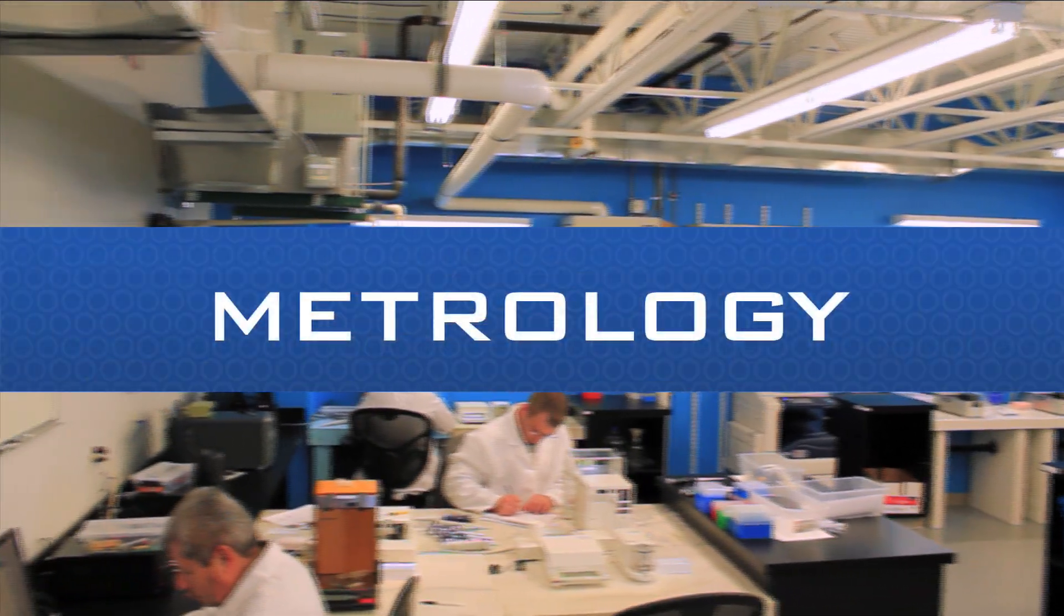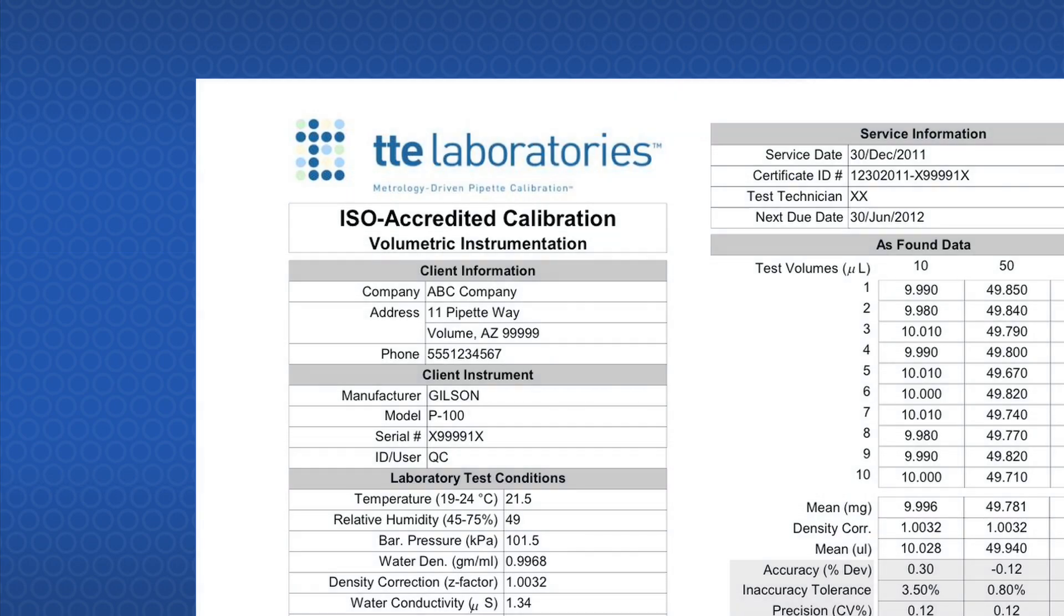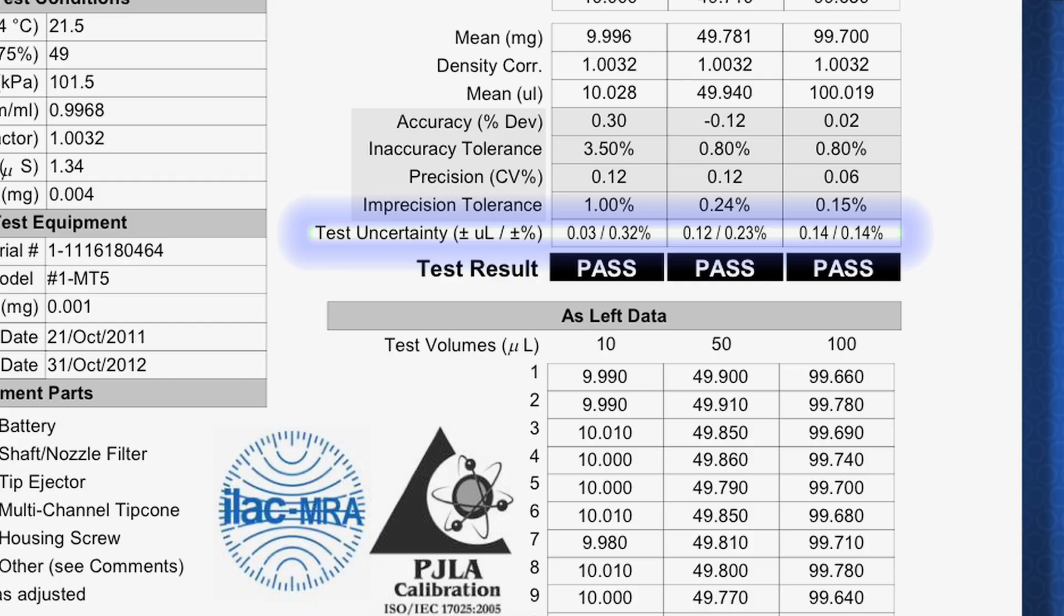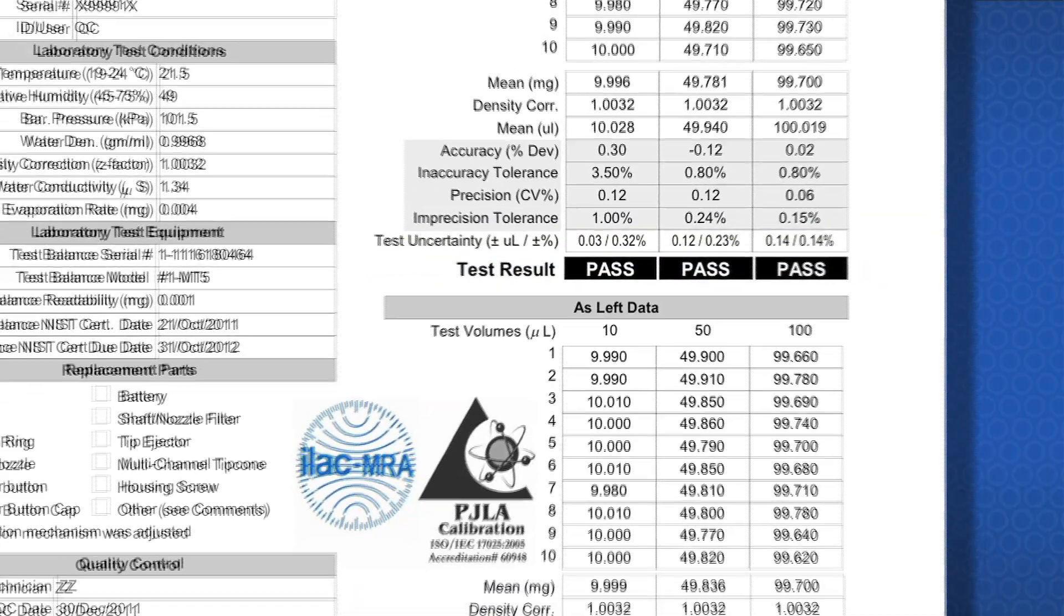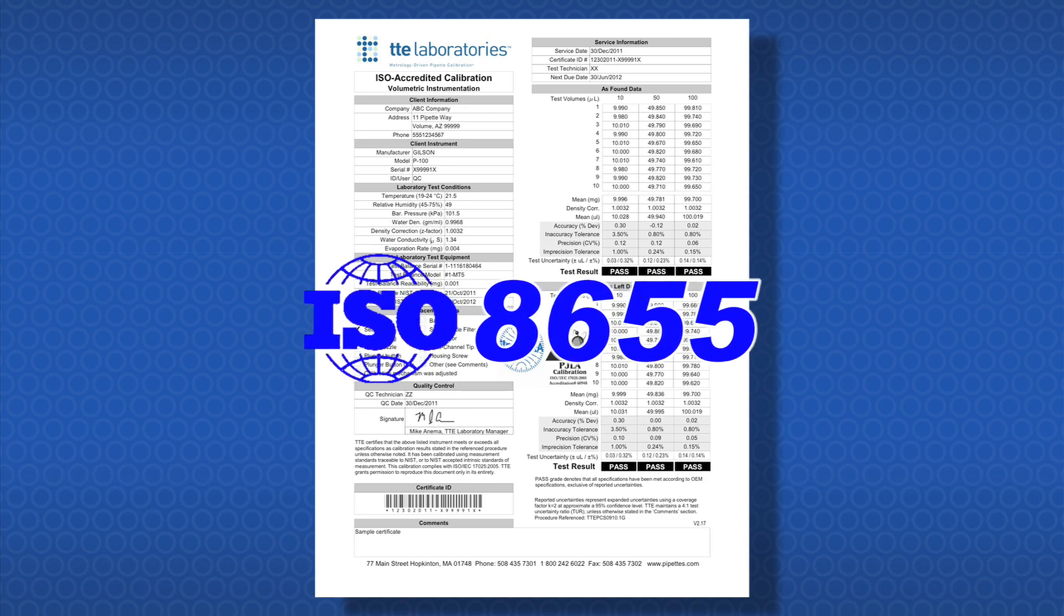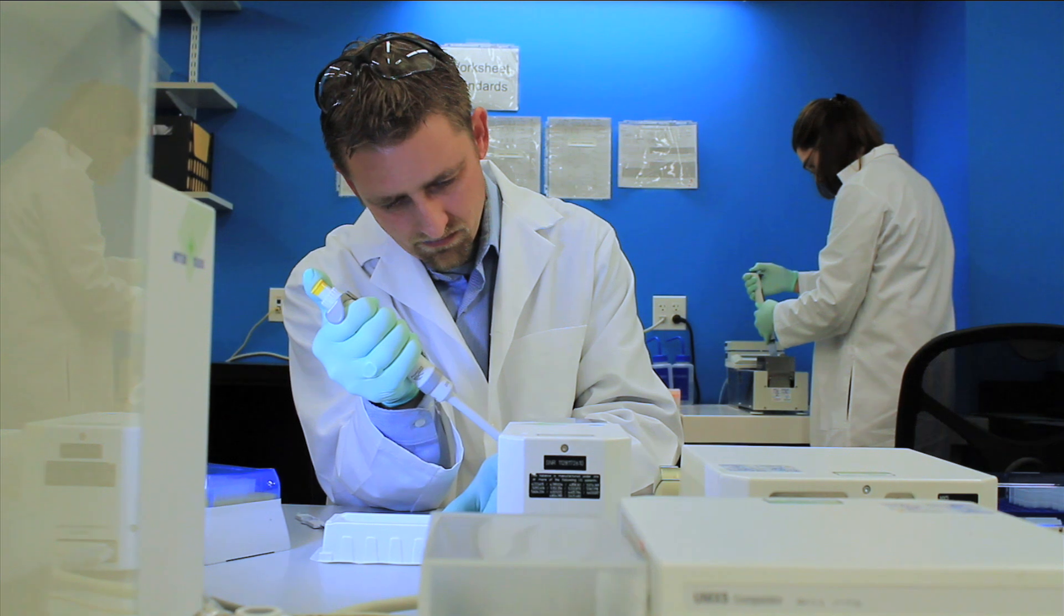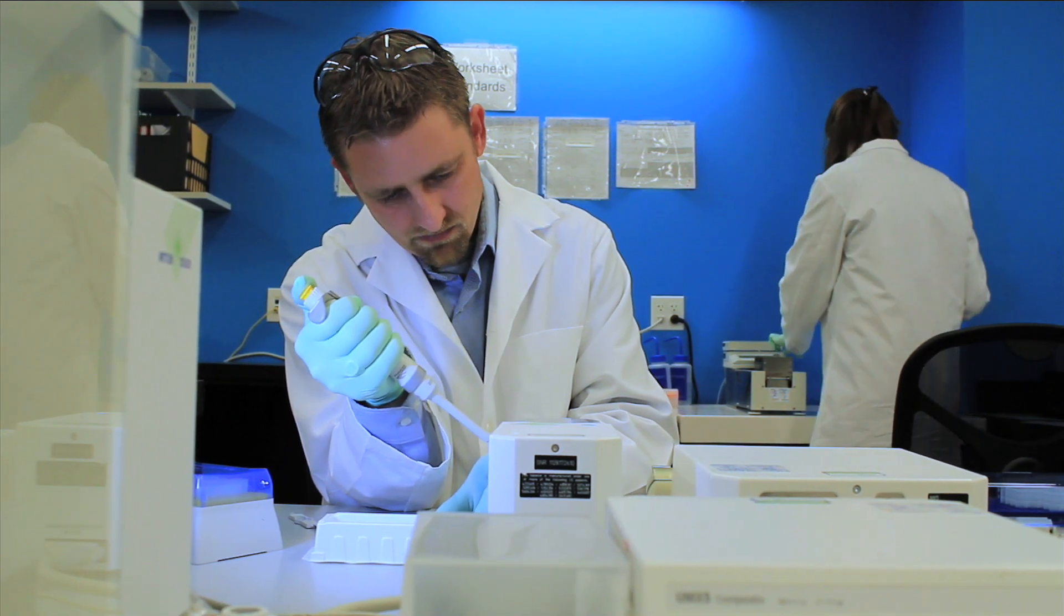While many pipette calibration service providers can be accredited by ISO 17025, guaranteeing that a system is in place, only a few of the highest quality providers invest in the additional level of quality exemplified by the procedures found in ISO 8655. After all, when comparing providers, the actual procedures they use guarantee the quality they provide.